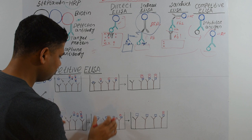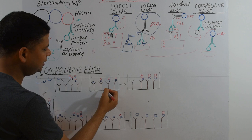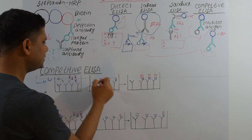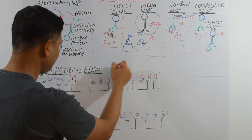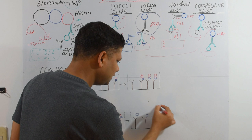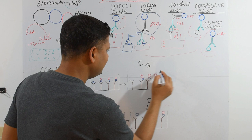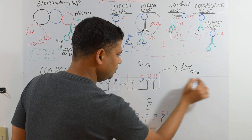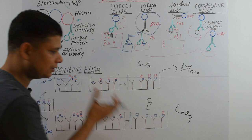After competitive binding, in the high-antigen serum condition we have mostly antigen without HRP conjugation. In the low-antigen serum condition, most antibody sites remain bound to the HRP-conjugated antigen. So after adding substrate, the high-antigen sample shows less luminosity and the low-antigen sample shows more luminosity.